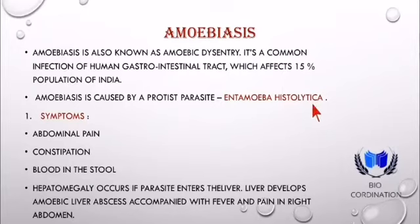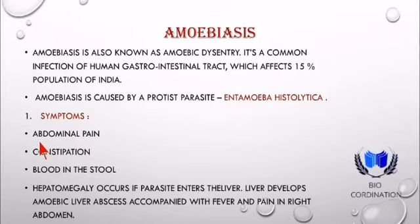Entamoeba histolytica parasite की वजह से यह disease cause होती है। Symptoms क्या हो सकते हैं? सबसे पहला symptom है abdominal pain, फिर constipation, blood in the stool, and hepatomegaly.